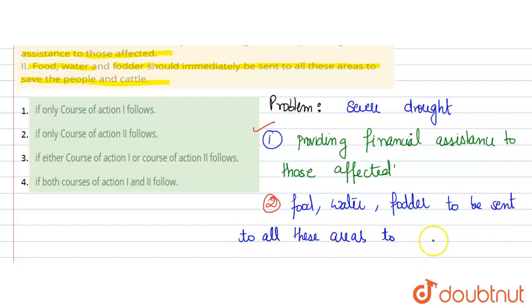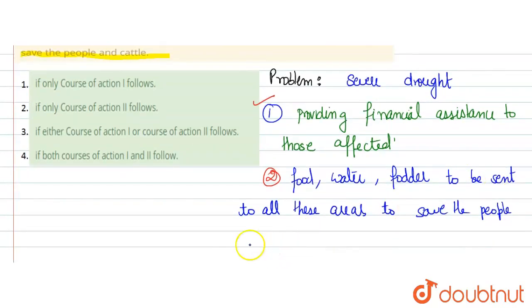अब देखे, जब वहाँ पे सूखा पड़ गया है तो न खाना होगा, न पानी होगा, न चारा होगा। तो आप people और cattle को save करने के लिए क्या कीजिए - food provide कीजिए, water provide कीजिए, and fodder provide कीजिए। तो इससे problem minimize हो जाएगी।